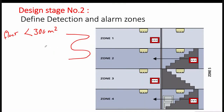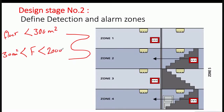If a floor is less than 300 square meters, you can assign the zone to more than one floor. But if a floor's area is bigger than 300 square meters and less than 2,000 square meters, you should assign a separate loop or a separate zone for each floor.